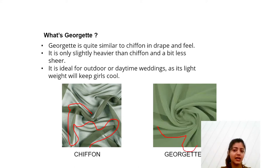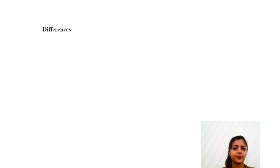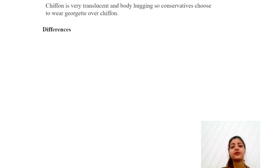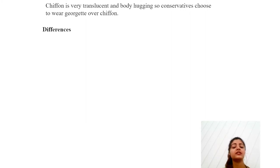In comparison to chiffon, georgette does not have as many folds. Let's move on to differences: the most important one is opacity and transparency. Chiffon is very translucent and body-hugging, so conservatives choose to wear georgette over chiffon. Chiffon is more translucent, meaning georgette is more opaque.